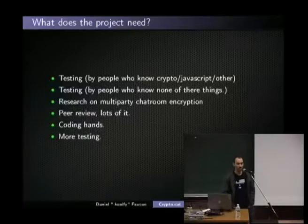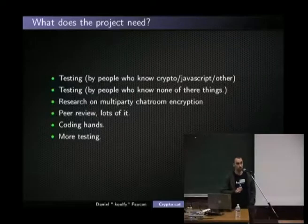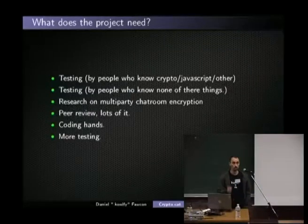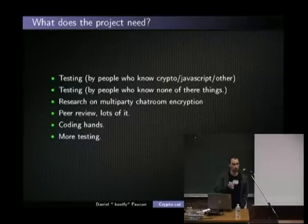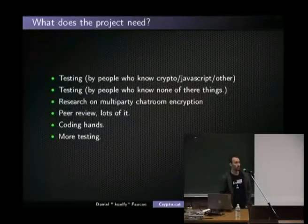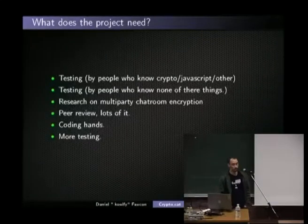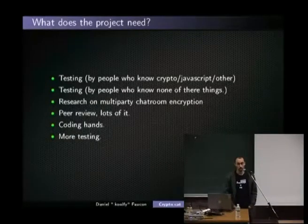Peer review also helps with finding flaws and improvements to make. To implement those improvements, we need coding hands. People who know JavaScript, who are used to browser plugins and encryption — because there are a lot of things we've already identified but haven't fixed yet due to lack of coding hands. And we need more testing, because there will never be enough testing. There will always be a bug we missed, and we need a lot of testers.